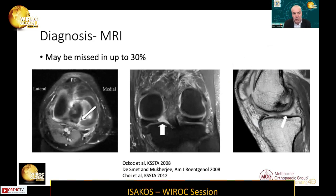Radiological diagnosis is on MRI scan, but these may be missed commonly — reportedly in up to 30% of cases. The common sign to look for is the ghost meniscus sign, and our radiological colleagues are now finding these with much more regularity.